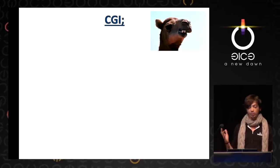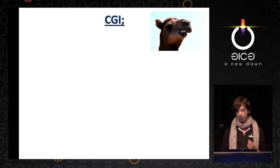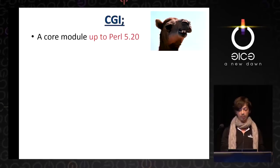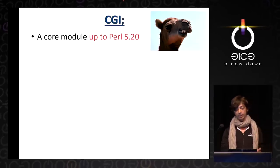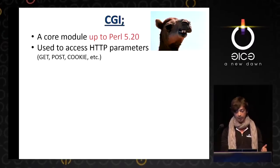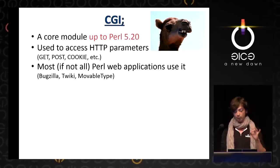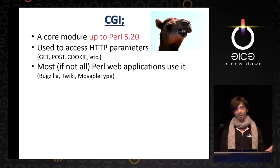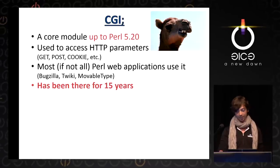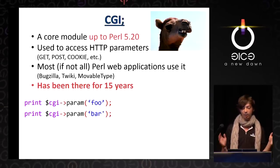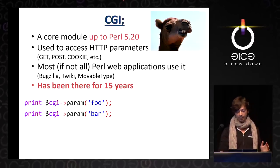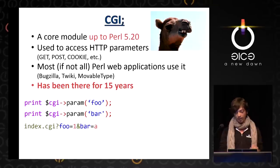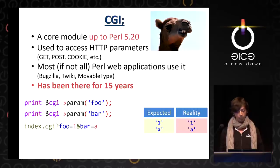So after we saw a list as a potential source for problems, one obvious way to explore this is to look at the CGI module. It's a core module responsible for processing and preparing HTTP requests and responses. Its data arrives from the user using HTTP parameters, and most if not all Perl web applications use it. Let's take code that prints the content of the foo and bar HTTP parameters. If we send a request where one is assigned to foo and A is assigned to bar, we'll see that one and A are printed, as expected.